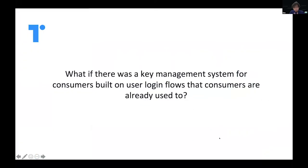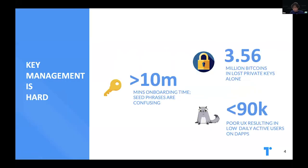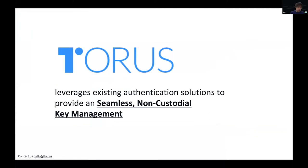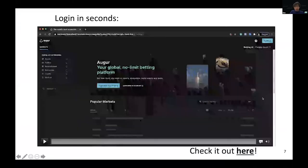Key management is definitely super hard. By UX tests, new users take above 10 minutes to onboard. Seed phrases are confusing. There are now millions lost in Bitcoin throughout the years, and the whole ecosystem is still under 90k daily active users on apps. What if this could change? What if there was a key management system built for consumers based on flows they already are used to? That's basically what Taurus does. We provide a seamless non-custodial key management solution that leverages existing authentication solutions which mainstream users are already familiar with.